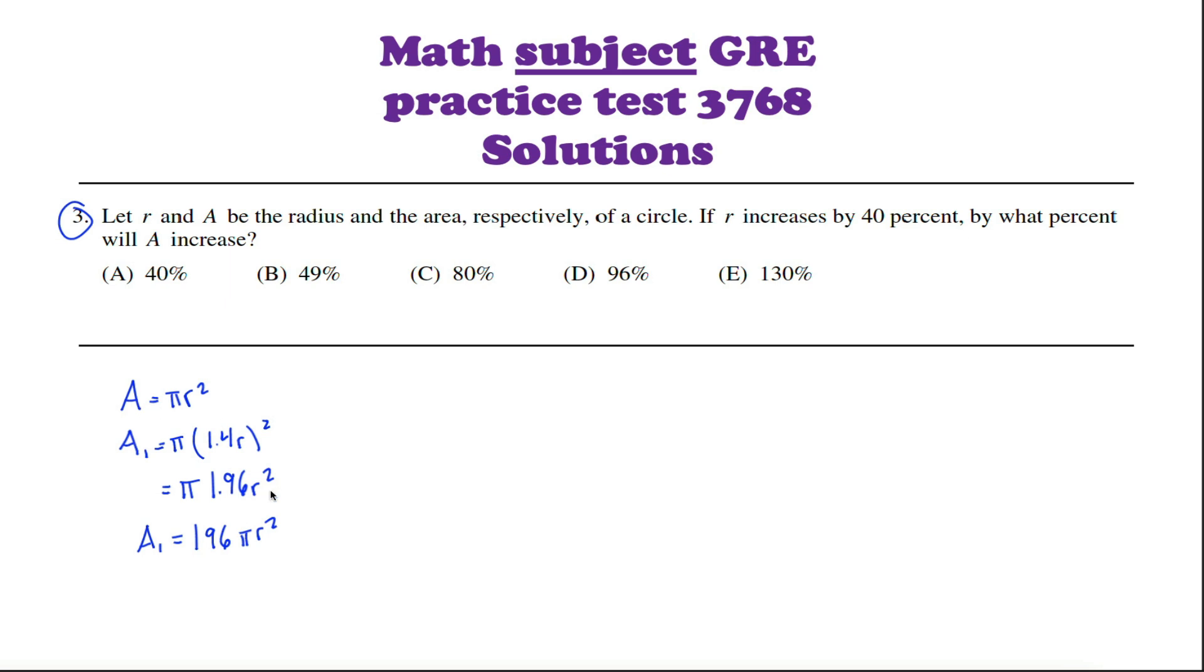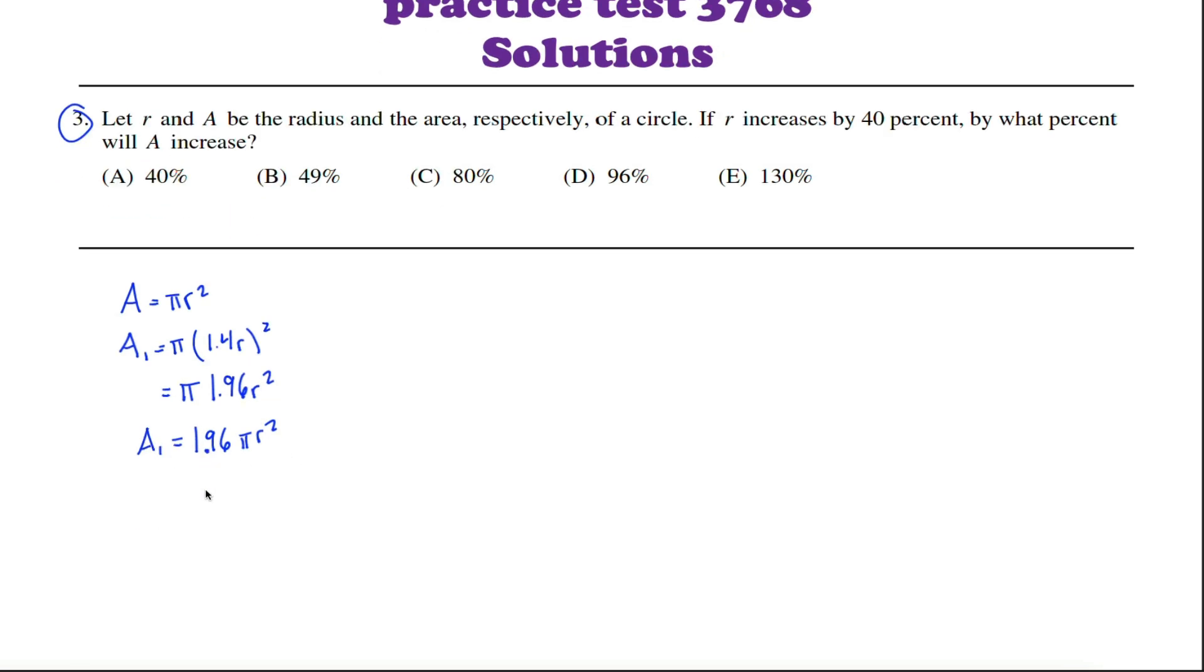Our original area was pi R squared. Our new area is 1.96 pi R squared. You might be able to just look at that and tell that the area increased by 96%.